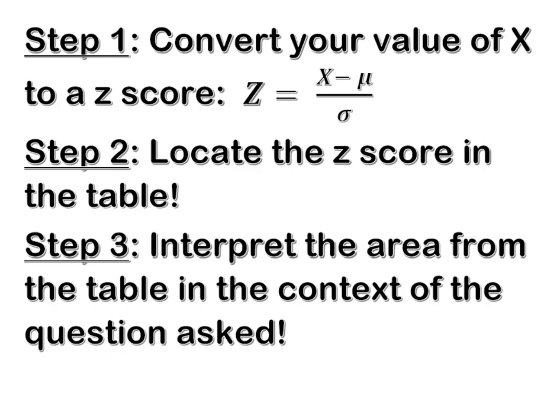Remember we have our three basic steps. We're going to convert our value of X to a z-score. We're then going to locate that z-score in the normal distribution table. Then we're going to have to interpret that area from the table in the context of the question that we've been asked.